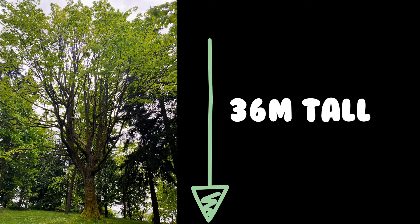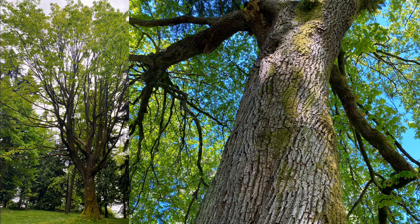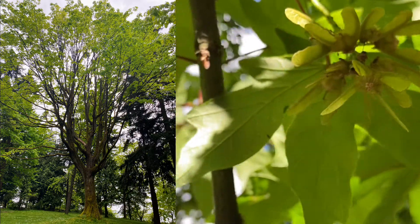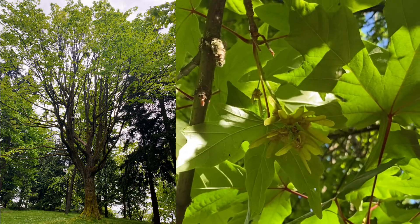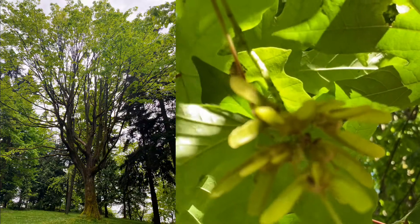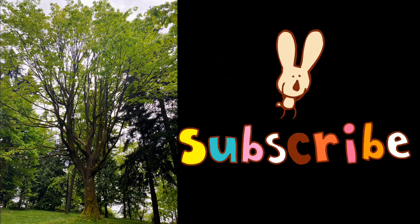The Big Leaf Maple is another tree that easily stands out from the rest. It is the largest maple in Canada, reaching heights of up to 36 meters. As its name implies, the leaves are also the largest of any maple, reaching up to 30 centimeters across. It has multiple stems and carries more moss than any other plant in our forest. As a deciduous angiosperm tree, the Big Leaf Maple does not produce cones, but instead spreads its seeds via dry-winged fruits that we all call helicopters. As our series on the coastal temperate rainforest continues, we'll learn more about these different groups of plants, so stay tuned.